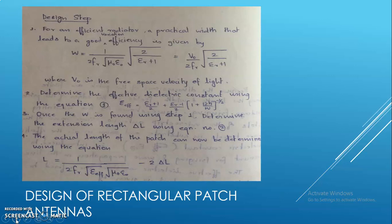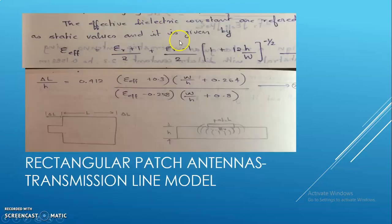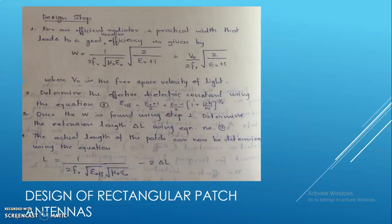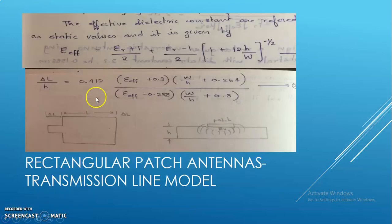Step 2: Determine the effective dielectric constant using equation 1. Step 3: Once W is found using step 1, determine the extension length delta_l using equation 2. If you know the effective dielectric constant, then you can find delta_l.